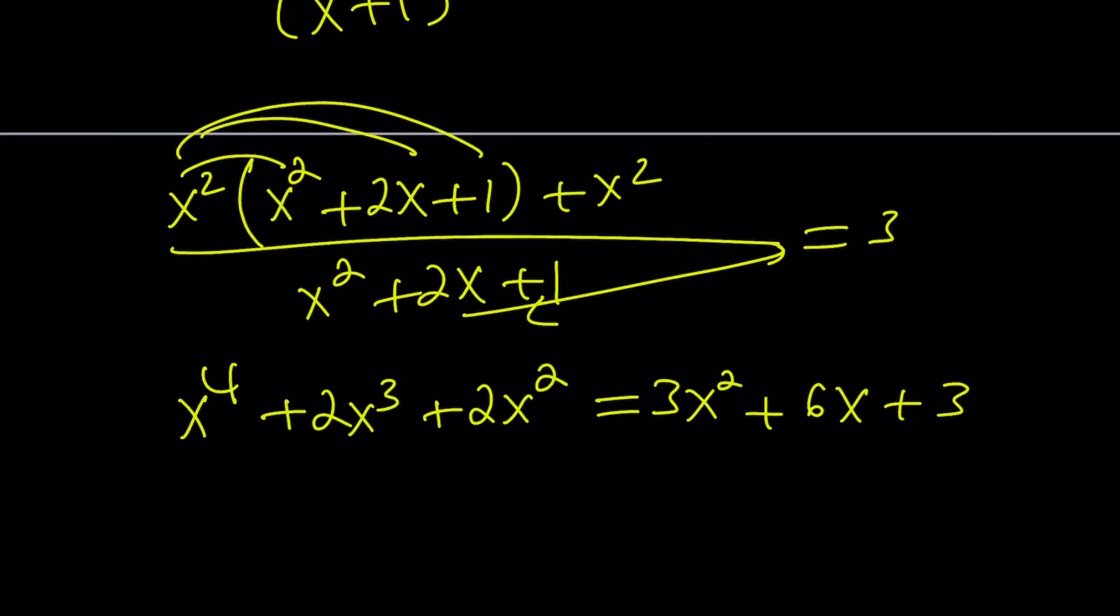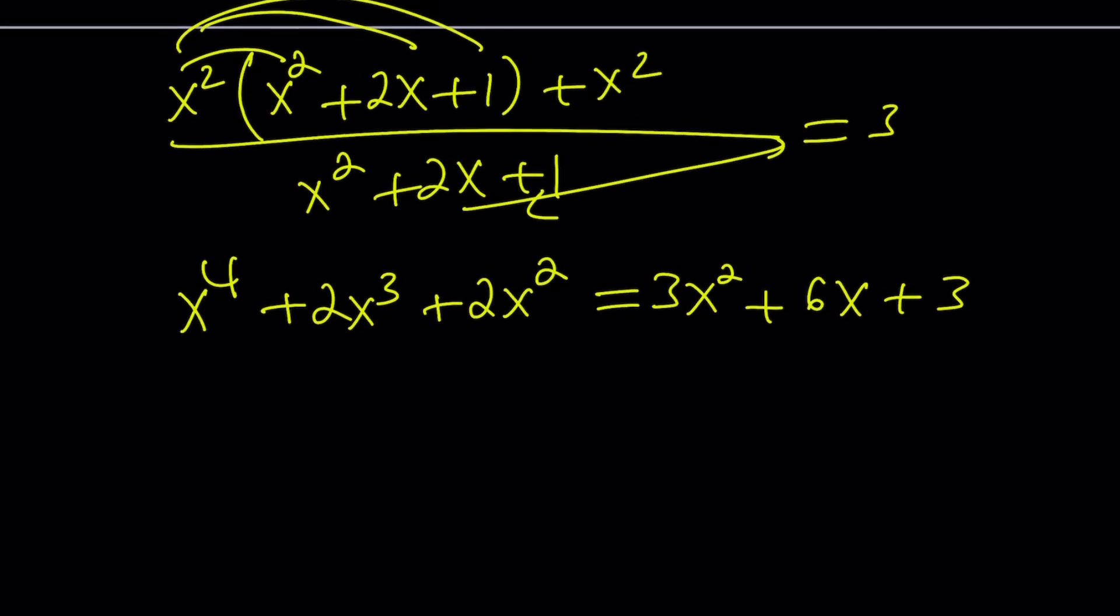Now since we have x to the 4th on the left hand side let's put everything on that side. So we're going to get x to the 4th power plus 2x to the 3rd power and then plus 2x squared minus 3x squared gives us negative x squared minus 6x minus 3 equals 0. Well not so awesome because you got a quartic equation.